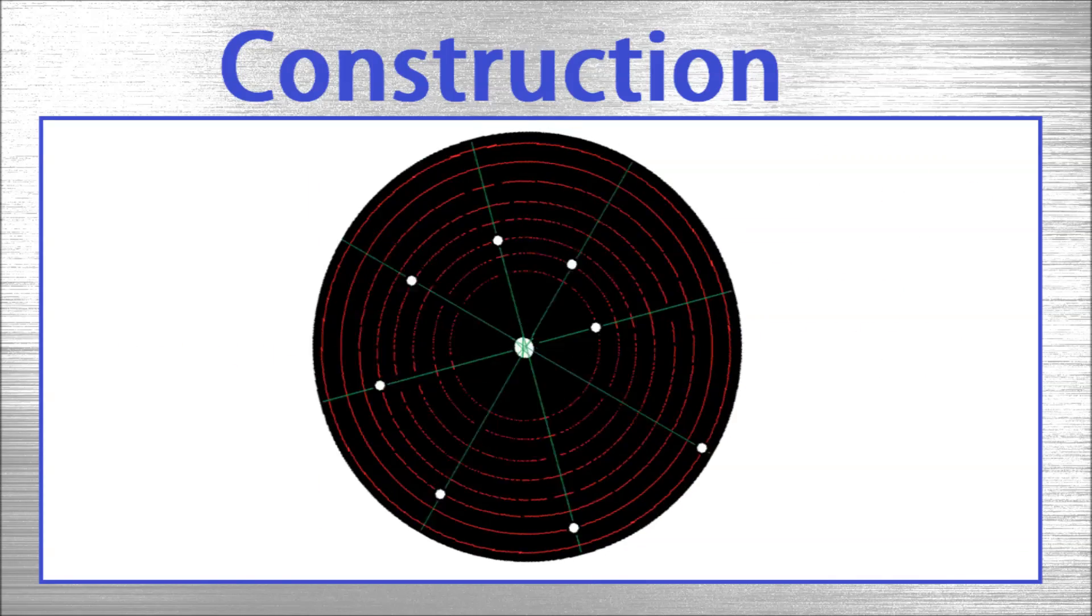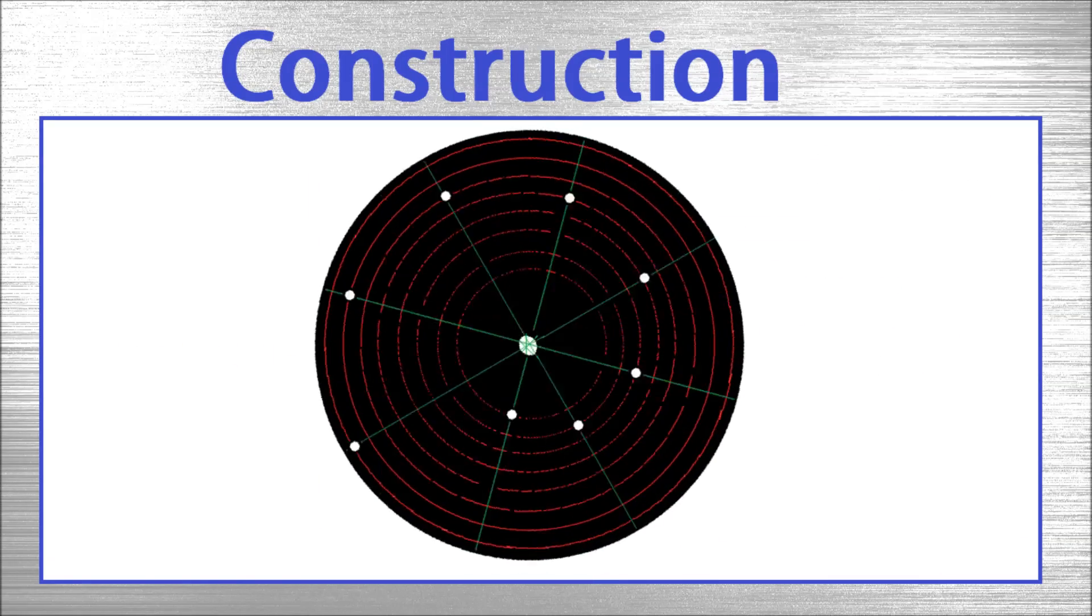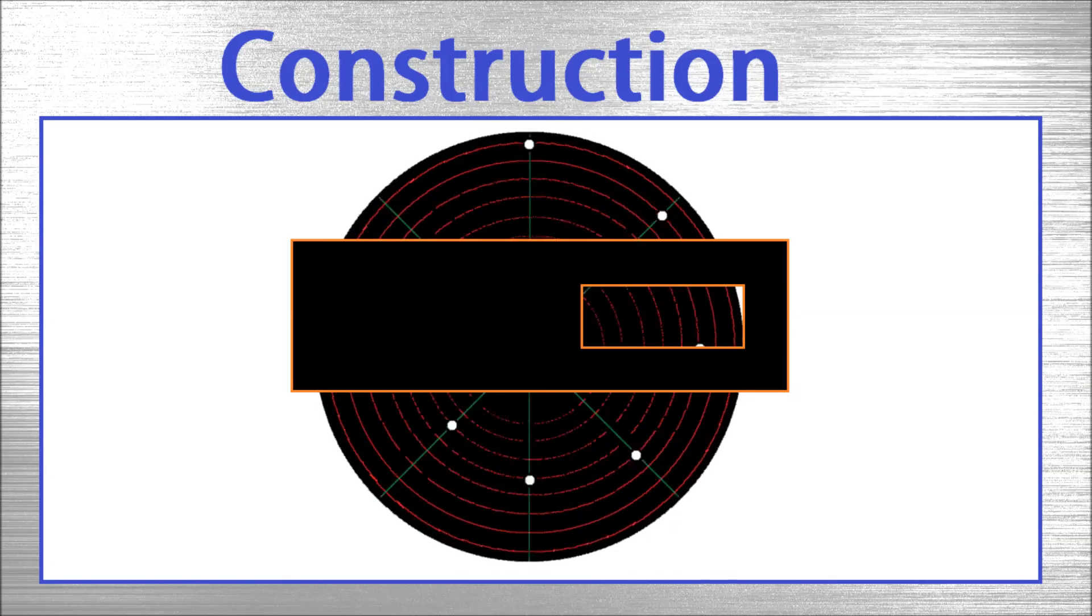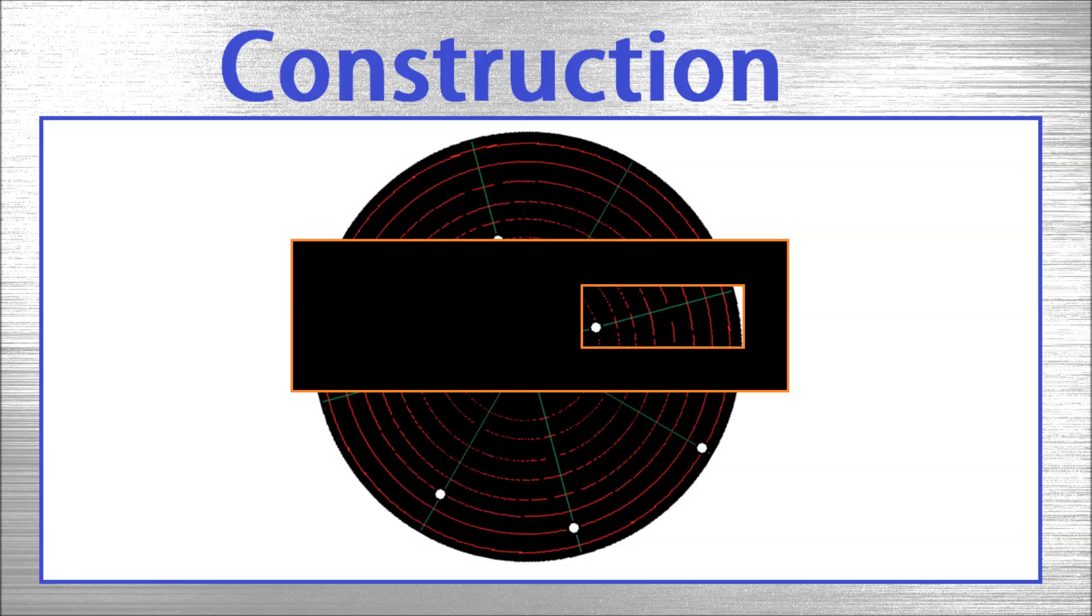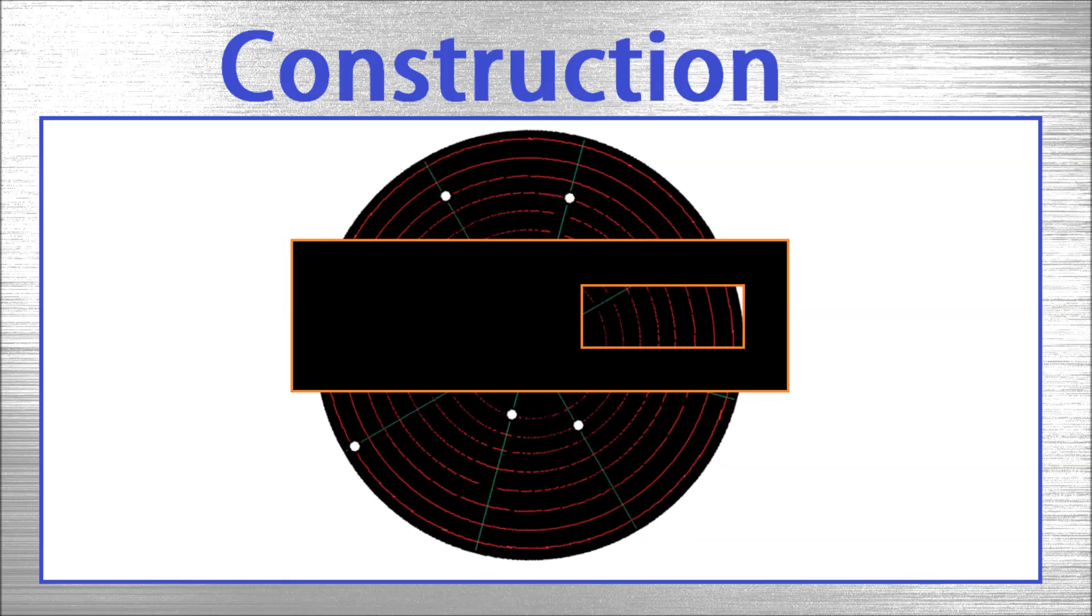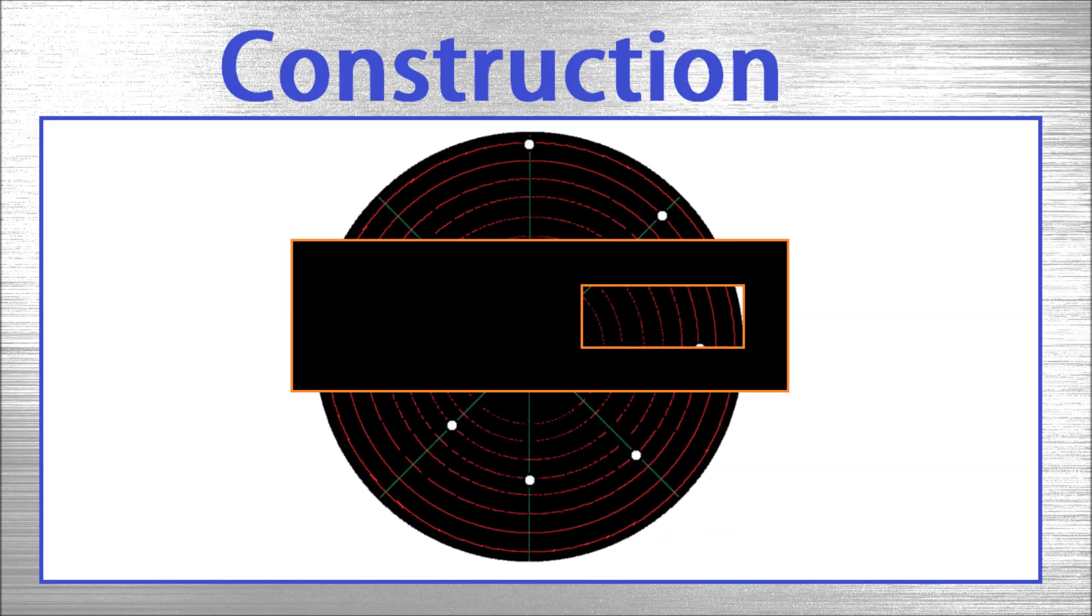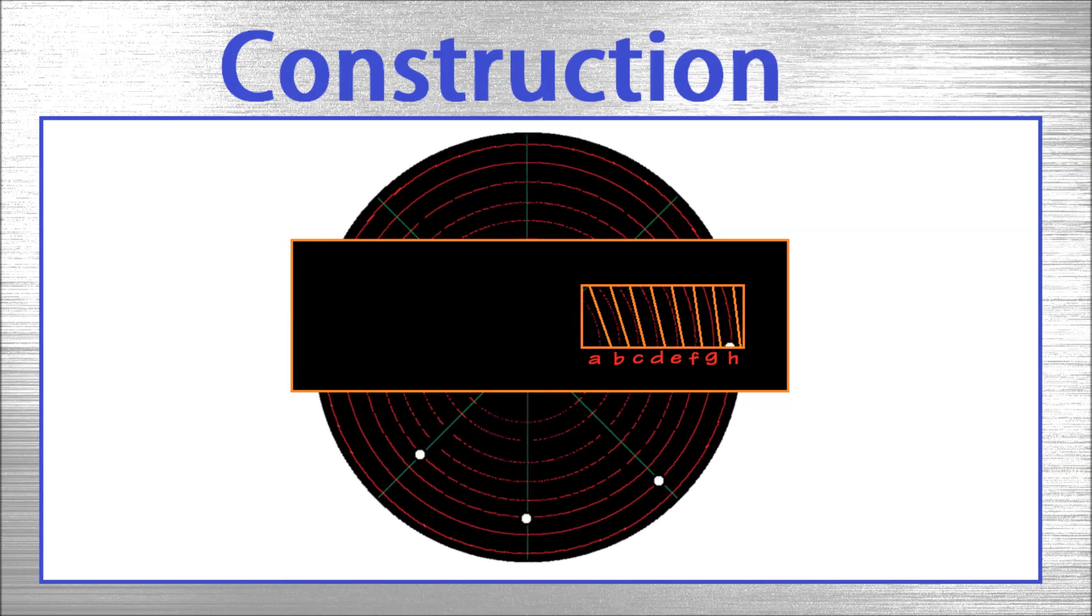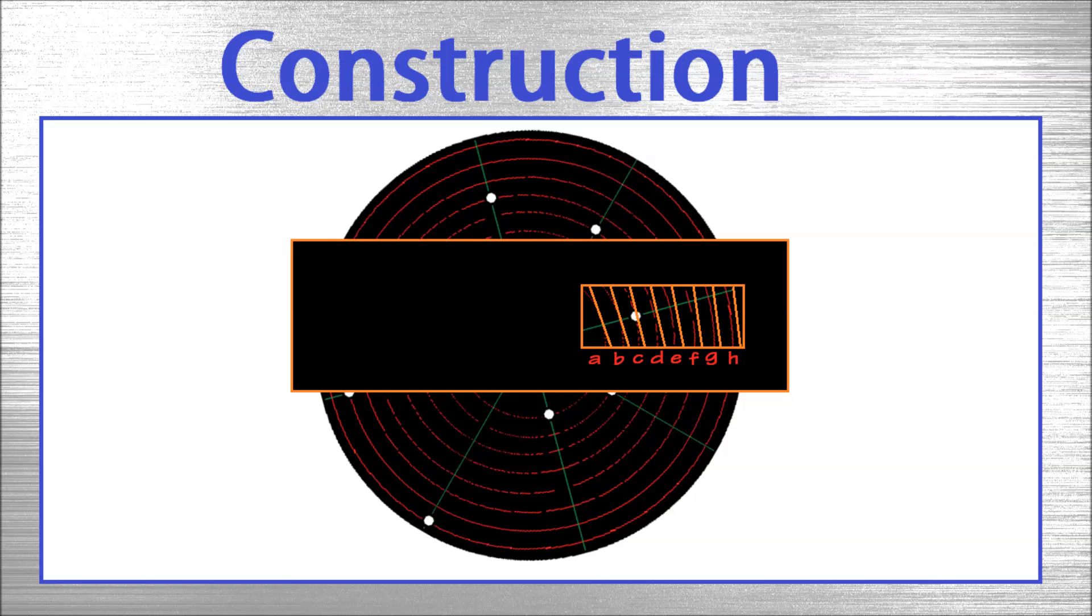If we spin the disc counterclockwise, the holes will move in the spiral. When a viewing window is placed in front of the disc, we can see the holes scanning the window from the bottom to the top and from the right to the left. The image is being split up in 8 lines. One rotation of the disc means one image.